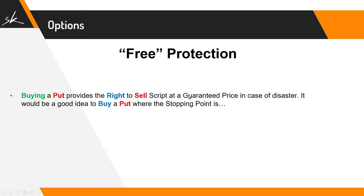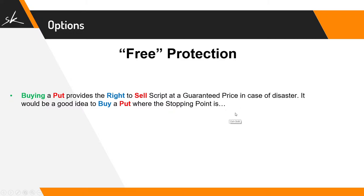Buying a put provides the right to sell a script at a guaranteed price in case of a disaster. As we covered in lesson five, wherever your stop loss is, you buy a put at that strike price. Whenever we are buying a put, we have to pay some premium. That is what we saw in lesson five — we would be paying some premium to gain that protection, which gives you a guaranteed exit in case the stock gaps against you. You will not be losing more than whatever your strike price was.